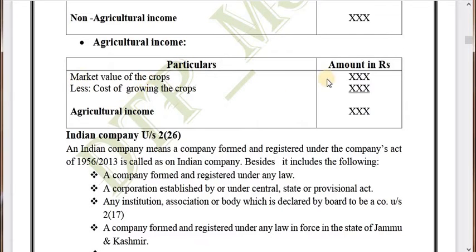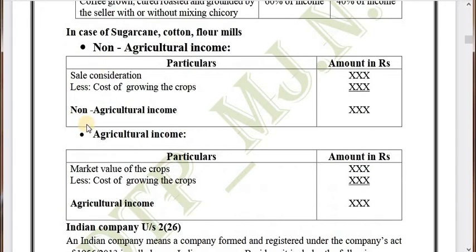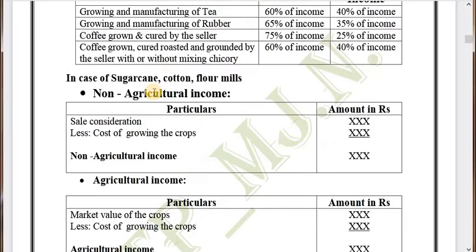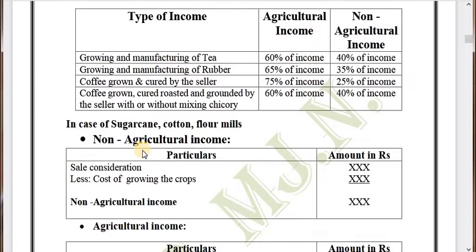To find agricultural income: market value of crops less cost of growing the crops gives you the agricultural income. Sale consideration minus cost of growing the crops gives non-agricultural income. That is the only difference — market value gives agricultural income; sale consideration gives non-agricultural income. This is the format to segregate agricultural and non-agricultural income in case of sugarcane, cotton, and floormill.